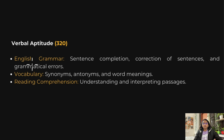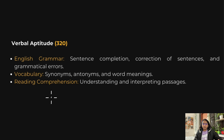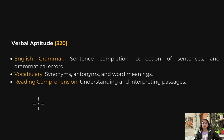For verbal aptitude, there are questions from English grammar, vocabulary, and reading comprehension. They ask for synonyms and antonyms of words, word meanings, and sentence completion. All these come under verbal aptitude.